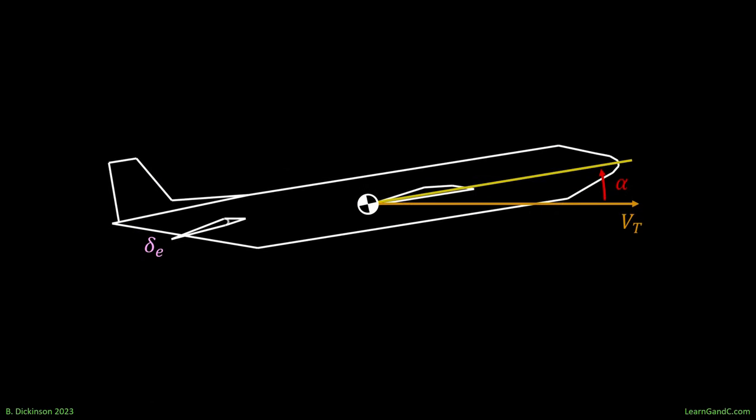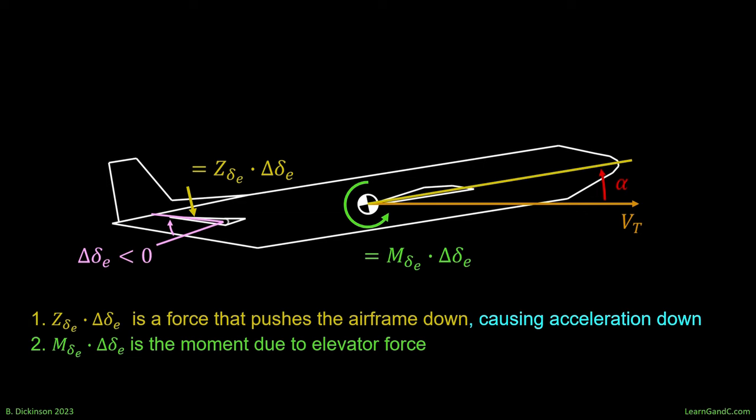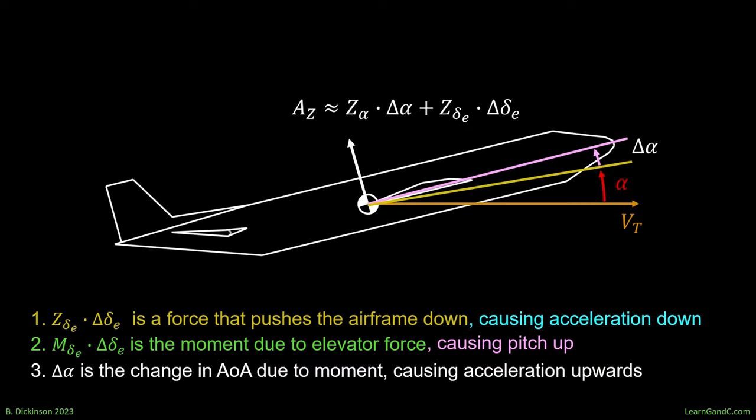Suppose we want to accelerate this aircraft up. We need to pitch up. So to do this, we pitch the elevator trailing edge up. This creates an immediate vertical force that pushes the airframe down, causing downward acceleration. But it also creates moment to pitch the nose up. And the change in angle of attack on the body after pitch up pushes the aircraft upwards. In aircraft, the non-minimum phase effect is that initial downward dip prior to acceleration in the opposite and desired direction.